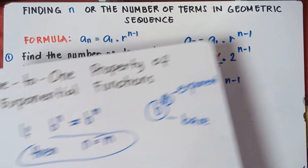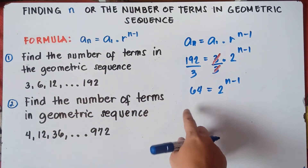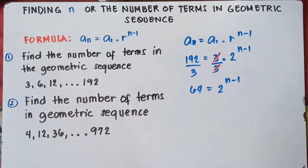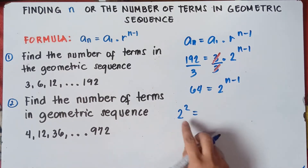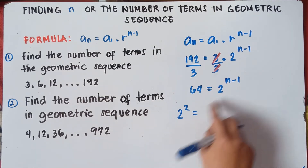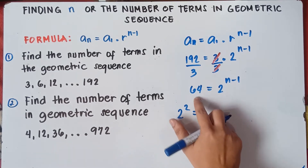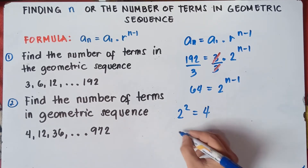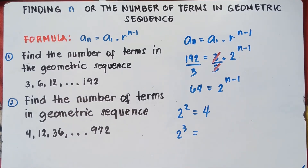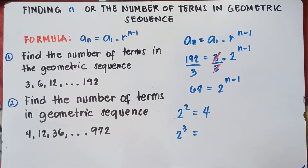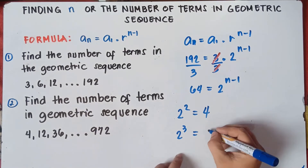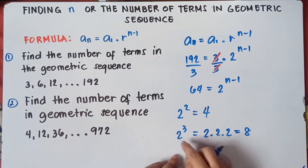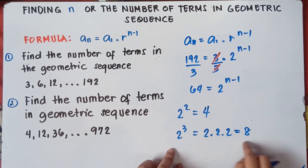So that's what we will do for 64. We need to write 64 as an exponential function with base 2. 2 raised to the power of 2 is 4, not 64. 2 raised to the power of 3 is 2 times 2 times 2, which is 8. 2 raised to the power of 4 is 2 times 2 times 2 times 2, which is 16.